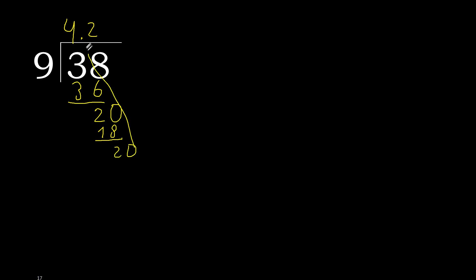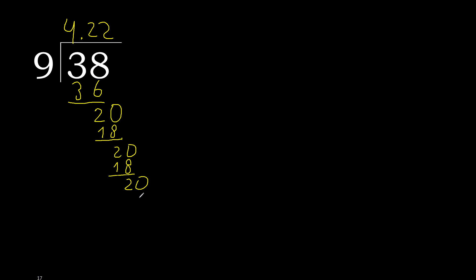Point. 0. Point — 9 multiplied by 2 is 18. Subtract. Complete. Here it repeats, therefore repeat.